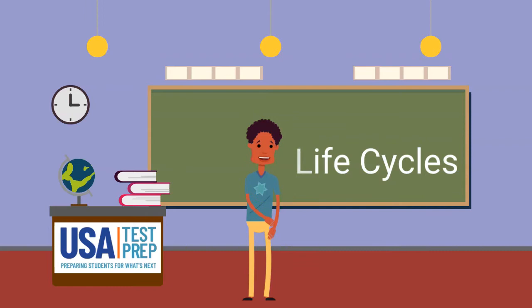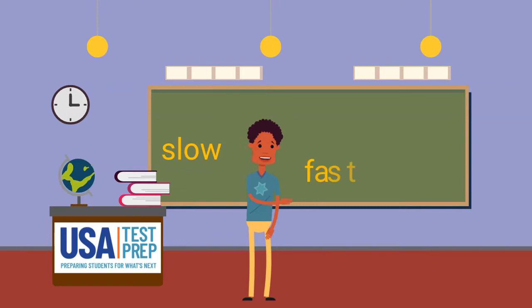A life cycle is when a living thing goes through different stages in its life. Sometimes the changes are slow. Sometimes the changes are fast.